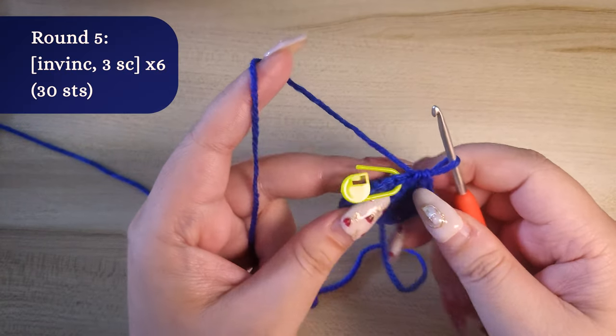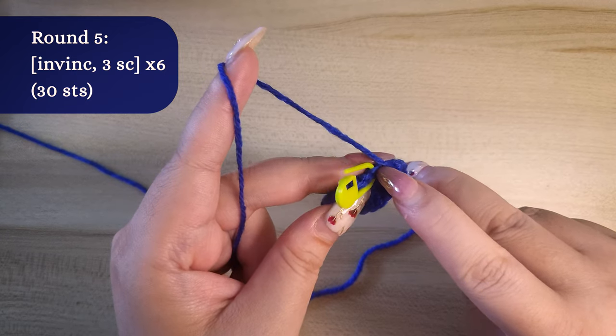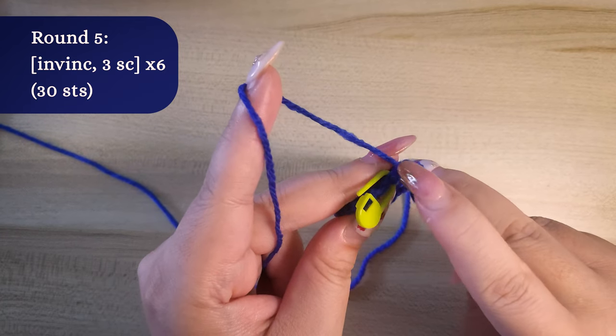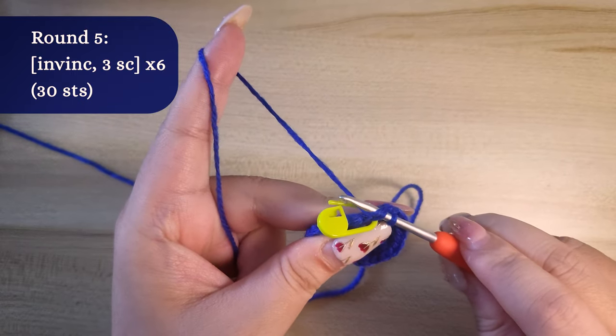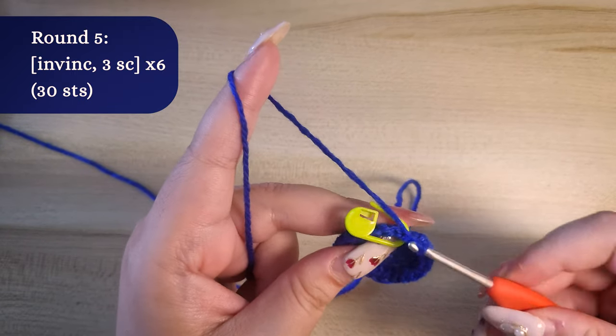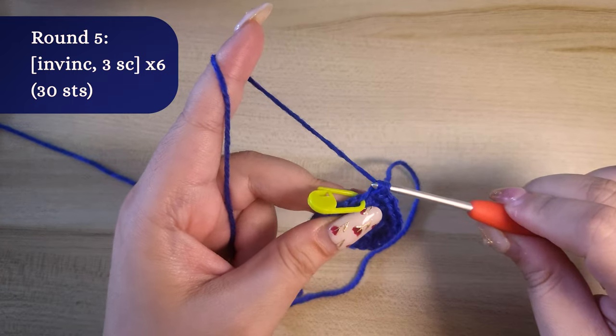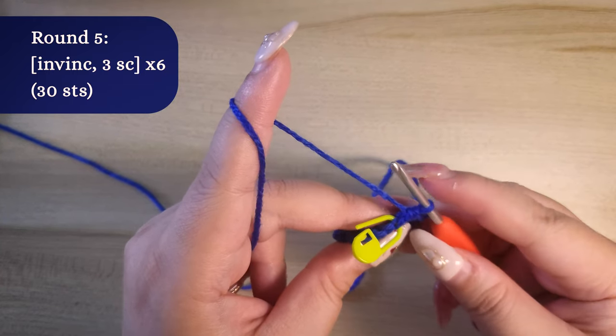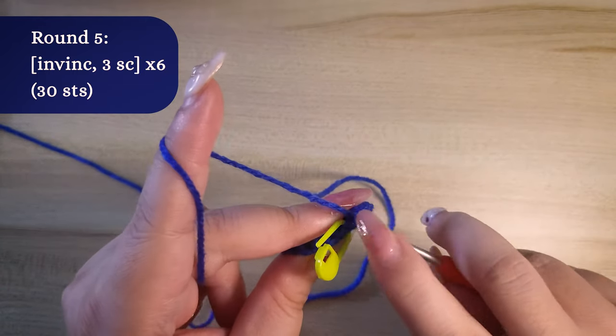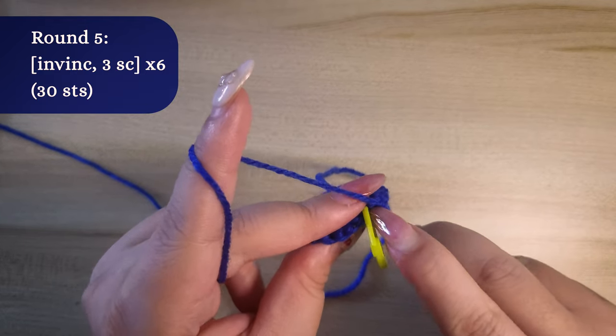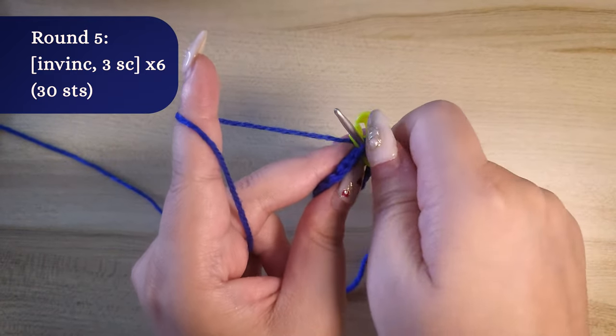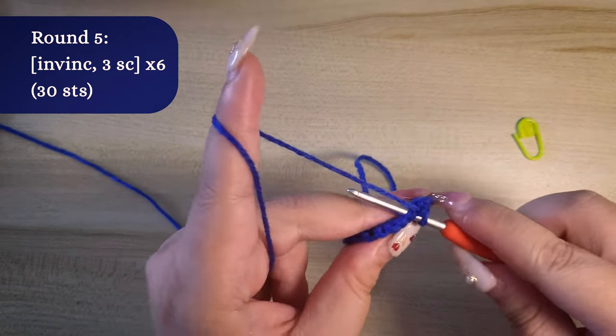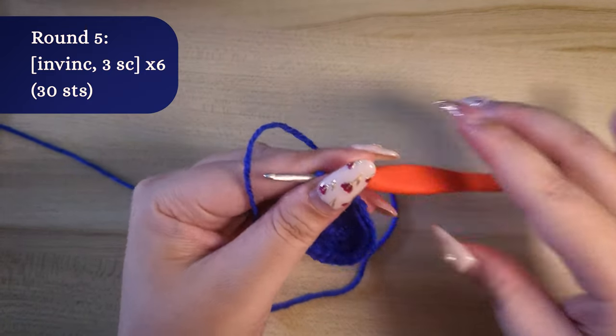Round 5, invisible increase, 3 single crochet and repeat this 6 times. We will end up with 30 stitches. Grab your stitch marker to mark the first stitch in the round.